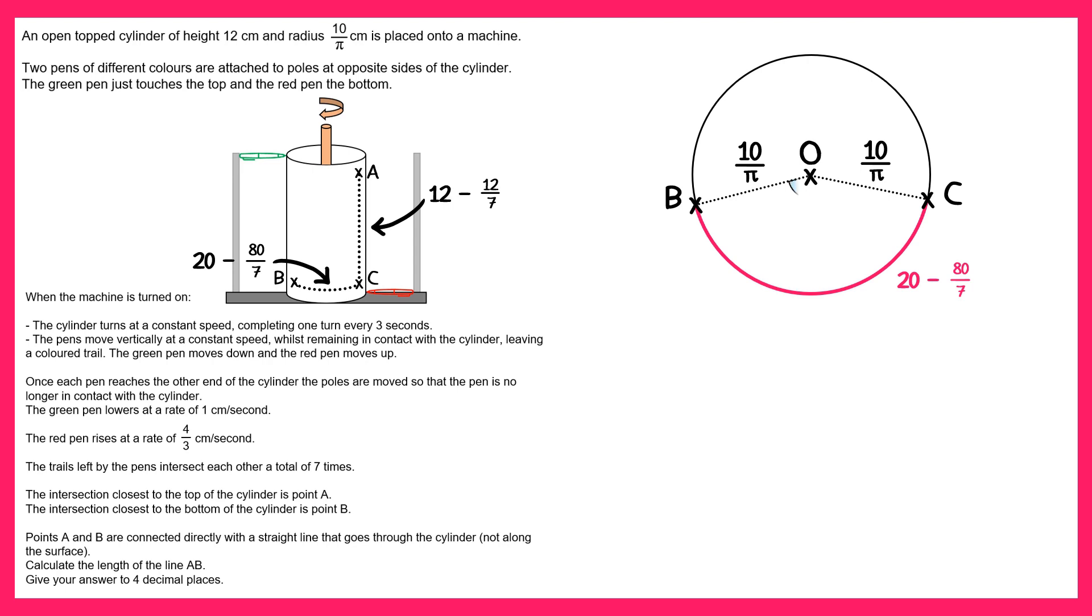Now what we want to do next is try and find this angle here. I'm going to call it theta. We know the length of this arc so we can use the arc length formula and work backwards to find its angle. So the formula is the angle theta over 360 times pi times the diameter which would be 20 over pi. And this must give us 20 take away 80 over 7. On the left hand side the pi's will cancel so we'll get 20 theta over 360. And if you multiply both sides by 360 then divide by 20 you'll get a theta value of 1080 divided by 7, which as a decimal is 154.28 and so on degrees. Let's also put this onto the diagram.